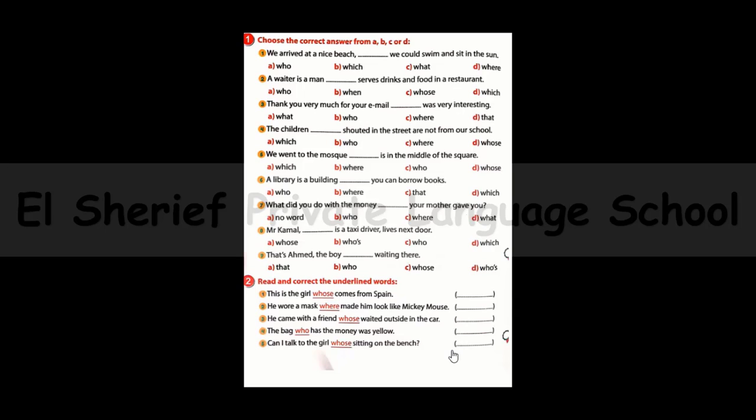Number five: We went to the mosque ___ is in the middle of the square. Since we are describing the place, the answer is 'which.' Number six: A library is a building ___ you can borrow books. Here we mention the use of the place, so the answer is 'where.'